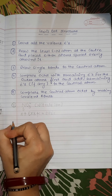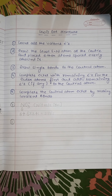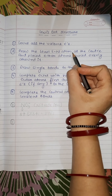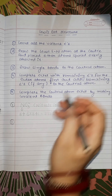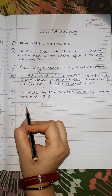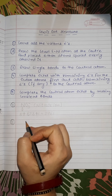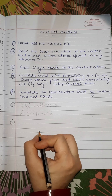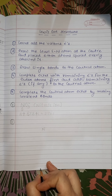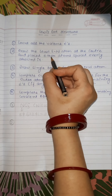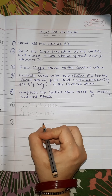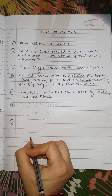Step 2: Draw the least electronegative atom at the center. Out of nitrogen and oxygen, nitrogen is the least electronegative. So we place nitrogen at the center and place the three oxygen atoms spaced evenly around it.